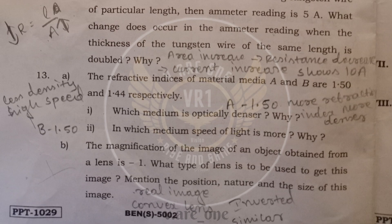And 13th. The refractive index of the material media A and B they have given. Media A is 1.50 and media B is 1.44 respectively. First question which medium is optically denser? Obviously the option A. It is having 1.50 refractive index. It is having more density. And B it is having 1.44. It is having less density. And speed of light is higher in medium B. Because it is having low density. The speed of the light will be more.